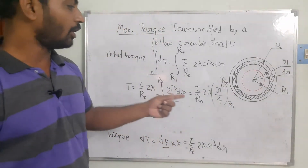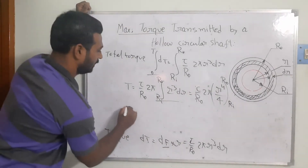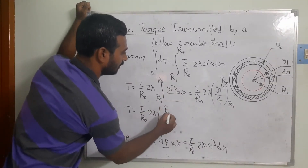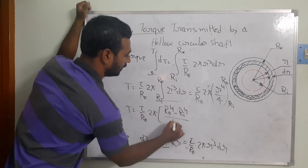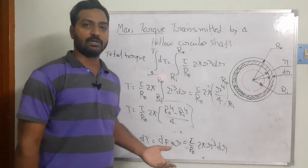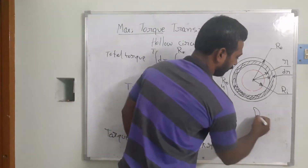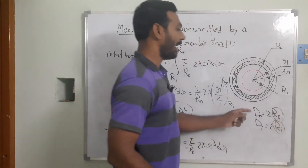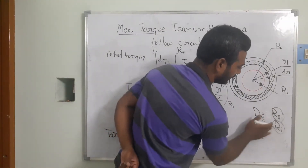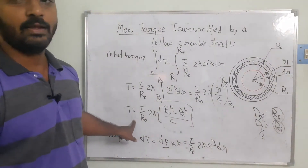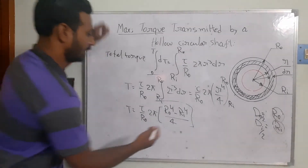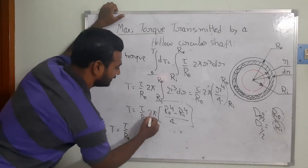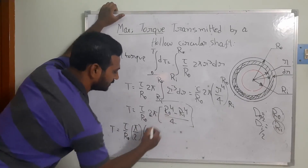Substituting the limits R_naught and R_i gives: T = (τ/R_naught)·(2π/4)·(R_naught⁴ - R_i⁴). To convert to diameter form, we use D_naught = 2·R_naught and D_i = 2·R_i, so R_naught = D_naught/2 and R_i = D_i/2. Substituting these into the equation gives T = (τ/R_naught)·(π/2)·[(D_naught/2)⁴ - (D_i/2)⁴].